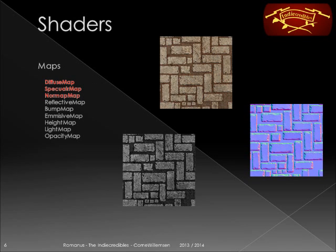We're going to do this through giving a diffuse map, a specular map, and a normal map. You can see here on the top the diffuse map, on the right the normal map, on the left here the specular map.